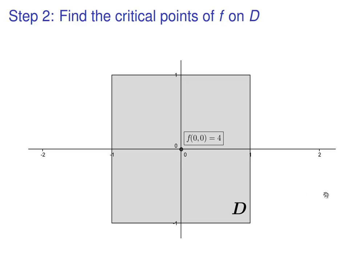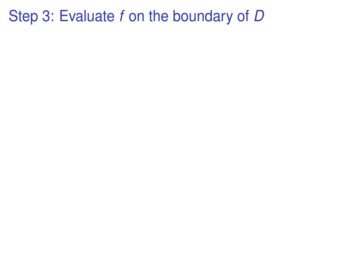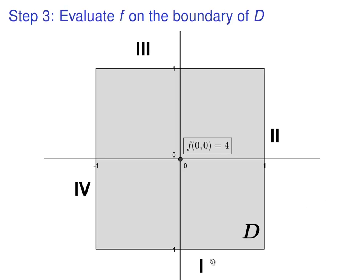We've evaluated the function on all the critical points within D. Now we'll check the boundary. So what we'll do is we'll label each side of this square. Call this one 1, 2, 3, 4. And the first thing we'll do is we'll evaluate f along, say, side 1.